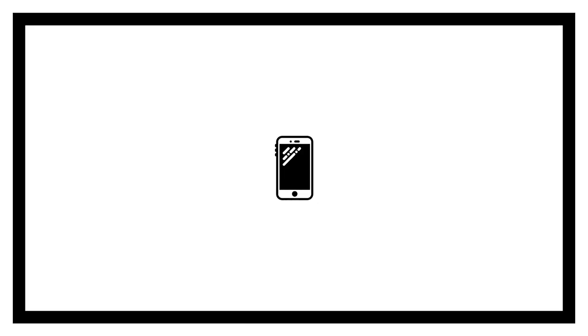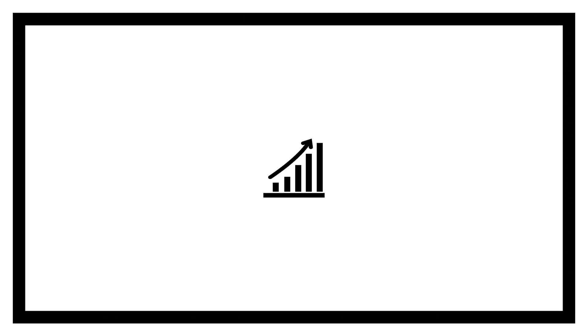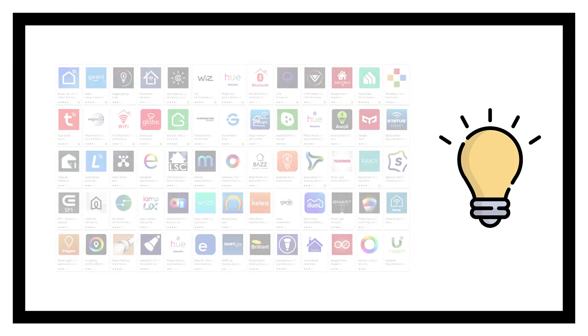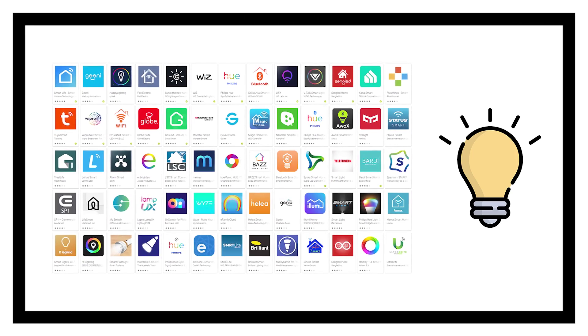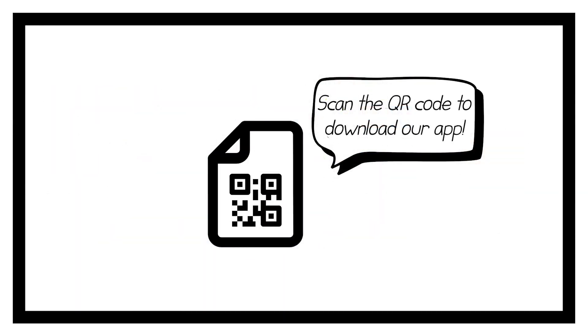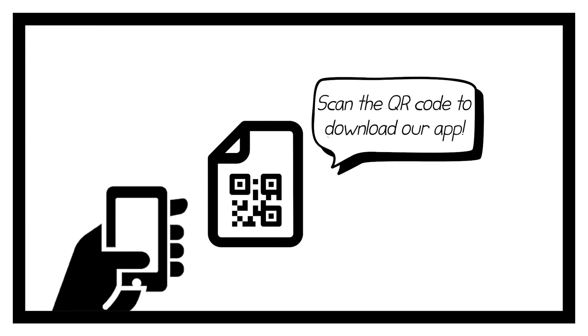These days, there is a mobile app for everything. This is also reflected in the exponentially growing number of apps available on the app markets. Consider a smart light — in order to use it, we will first need to download an app for it. And typically, QR codes are used as an inexpensive means for redirecting users to these app markets.